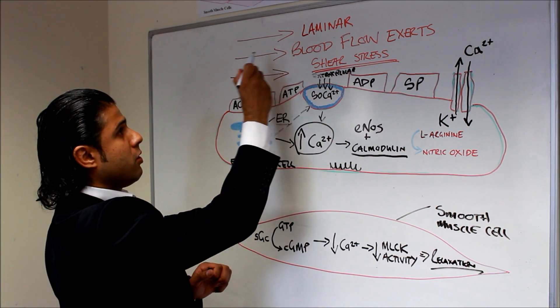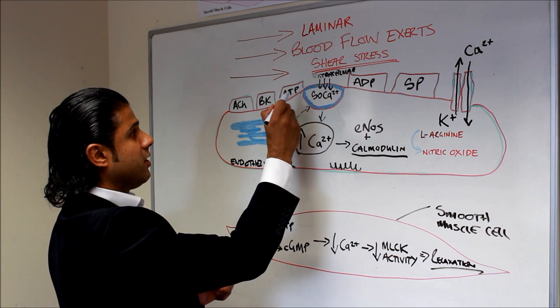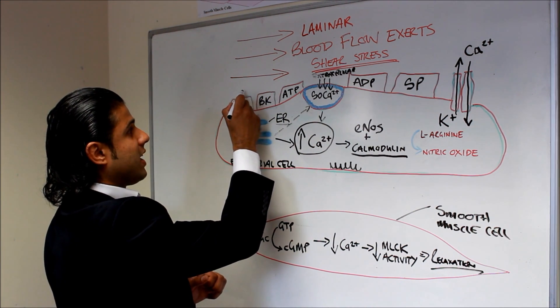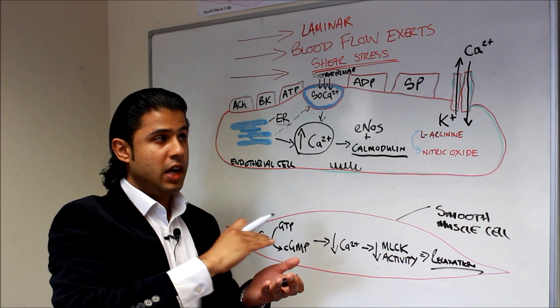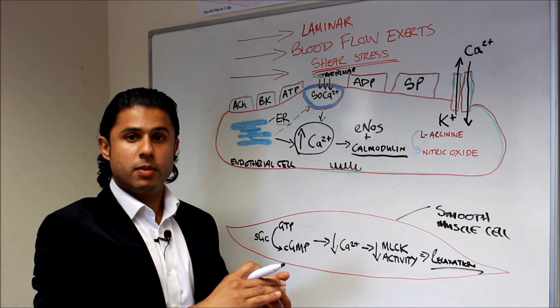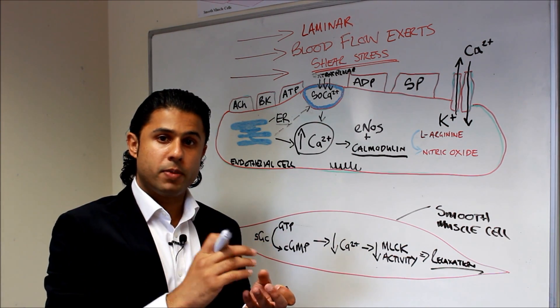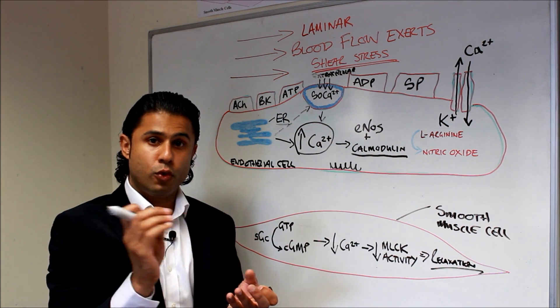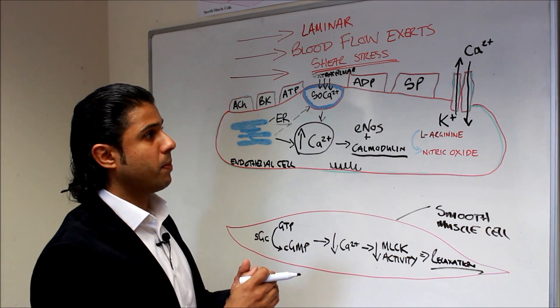So as the blood flows parallel to the blood vessel to the endothelium, it's exerting a dragging frictional force against the endothelium. Like when water goes through a pipe, the water is actually exerting a force on the inside of the pipe.